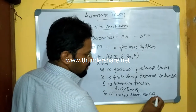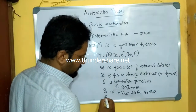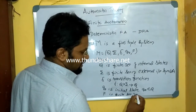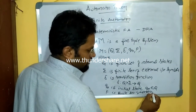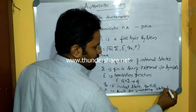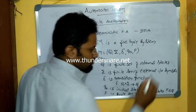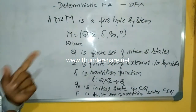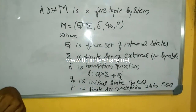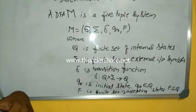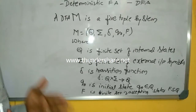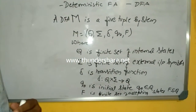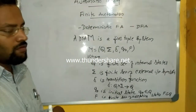q0 is the initial state, where q0 belongs to Q. F is the finite set of accepting states, also called final states. F should be a subset of Q. To summarize: a DFA is a five-tuple system with Q, sigma, delta, q0, and F — where Q is the set of internal states, sigma is the set of input symbols, delta is the transition function mapping Q cross sigma to Q, q0 is the initial state belonging to Q, and F is the set of final or accepting states which is a subset of Q. Thank you.